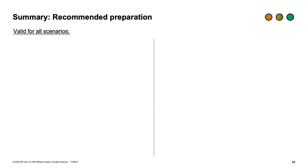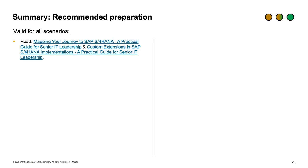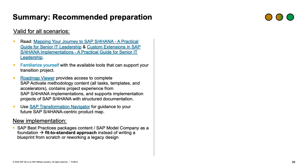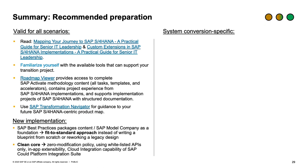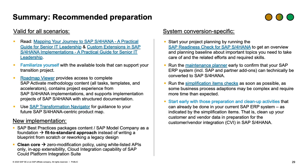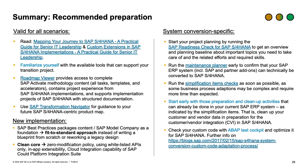In summary, key recommendations: read 'Mapping Your Journey to SAP S/4HANA — A Practical Guide for Senior Leadership' and the guide on custom extensions. Familiarize yourself with available tools: use the Roadmap Viewer to learn how to run a project and the Transformation Navigator for landscape design. For new implementation, remember SAP Best Practices, Model Company, and the clean core ideas. For system conversion: remember the Readiness Check and Maintenance Planner, look at the simplification items, and start early with preparation and cleanup activities to avoid surprises during project execution.